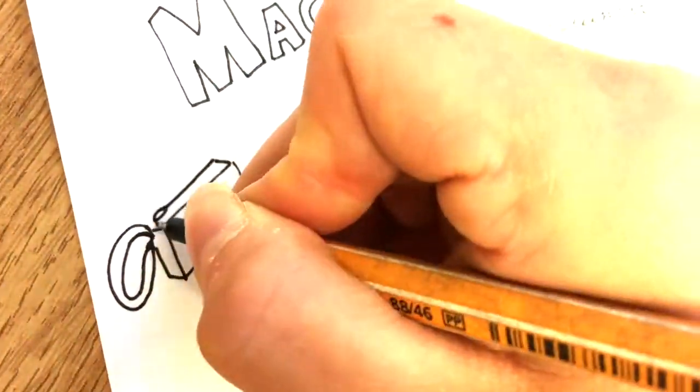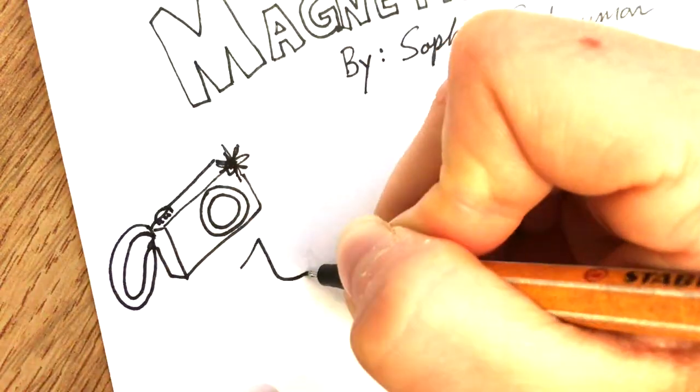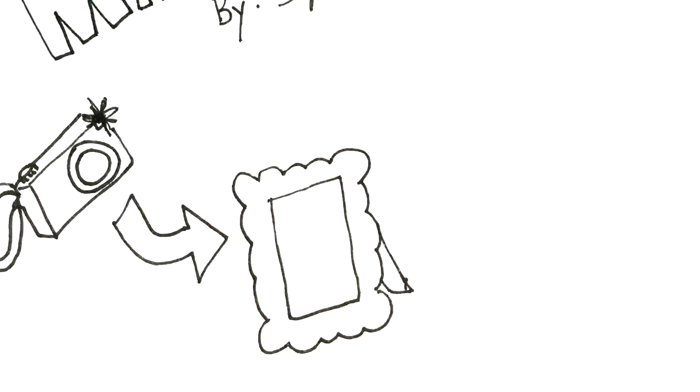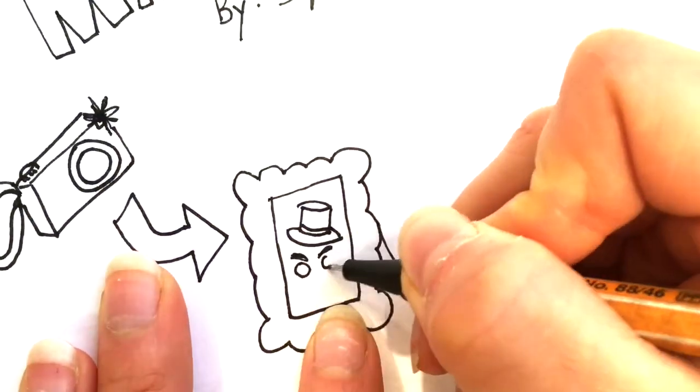Images can give us important information about the world. A photograph might tell you what your great-grandpa looked like and an MRI scan might tell you what your brain looks like and how it works.